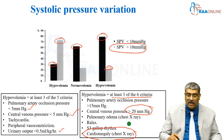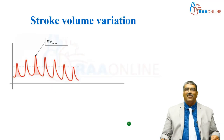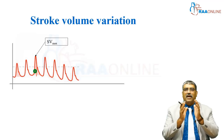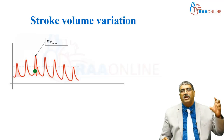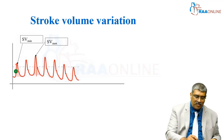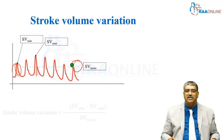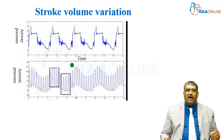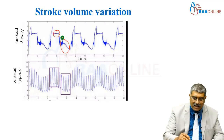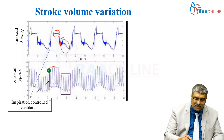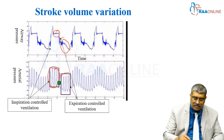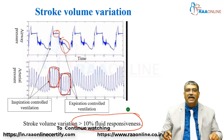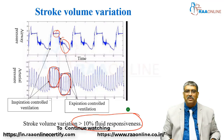Coming to the most important variable: stroke volume variation. The stroke volume is the area under the curve in the arterial line, which establishes the stroke volume. You take the maximum stroke volume, the minimum stroke volume, and the mean stroke volume. The variation is established by subtracting the minimum from the maximum and dividing by the mean. The inspiratory limb shows higher stroke volume, and in expiration the stroke volume is lower. Stroke volume variation greater than 10 percent indicates fluid responsiveness.